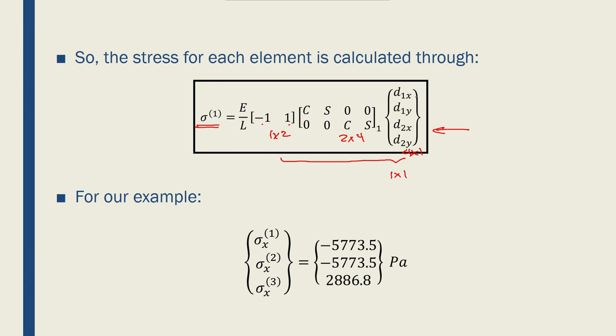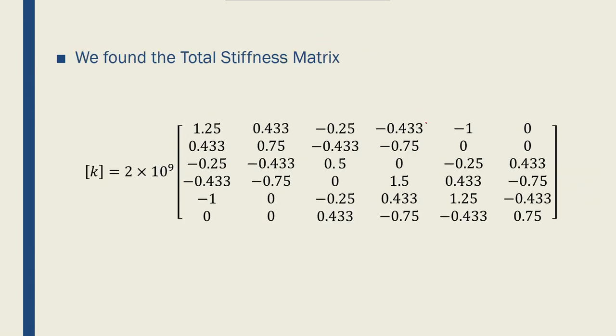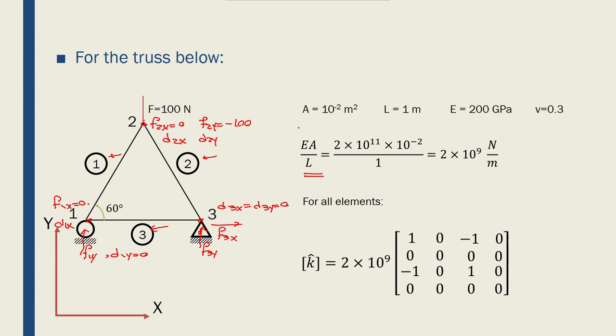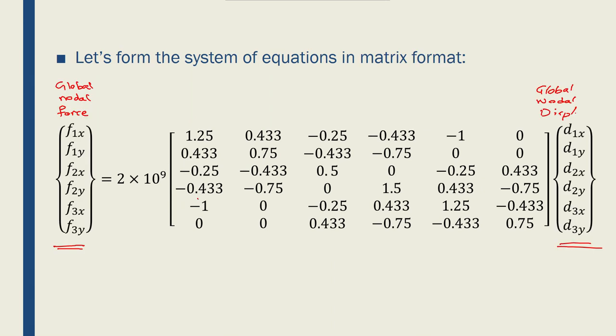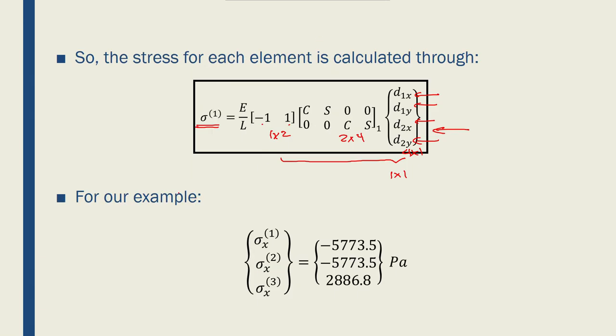All I need to do is to make sure that what nodes are used for each element. So for example, for node 2, if I go back to my original model here, node 2, I would use the global nodal displacements of nodes 2 and 3. So if I go back to the slide here, instead of that, I would use d2x, d2y, d3x, d3y.